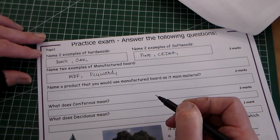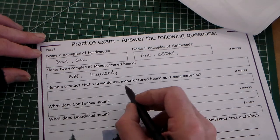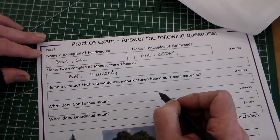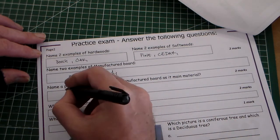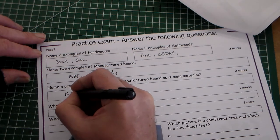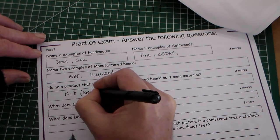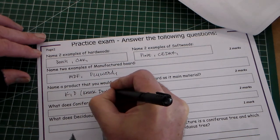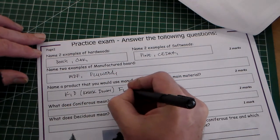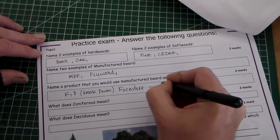Name a product that you would use manufactured board as its main material. So we're thinking of a product. I'm going to say KD, which is knocked down. So I'll actually write knock down. KD stands for knock down furniture.